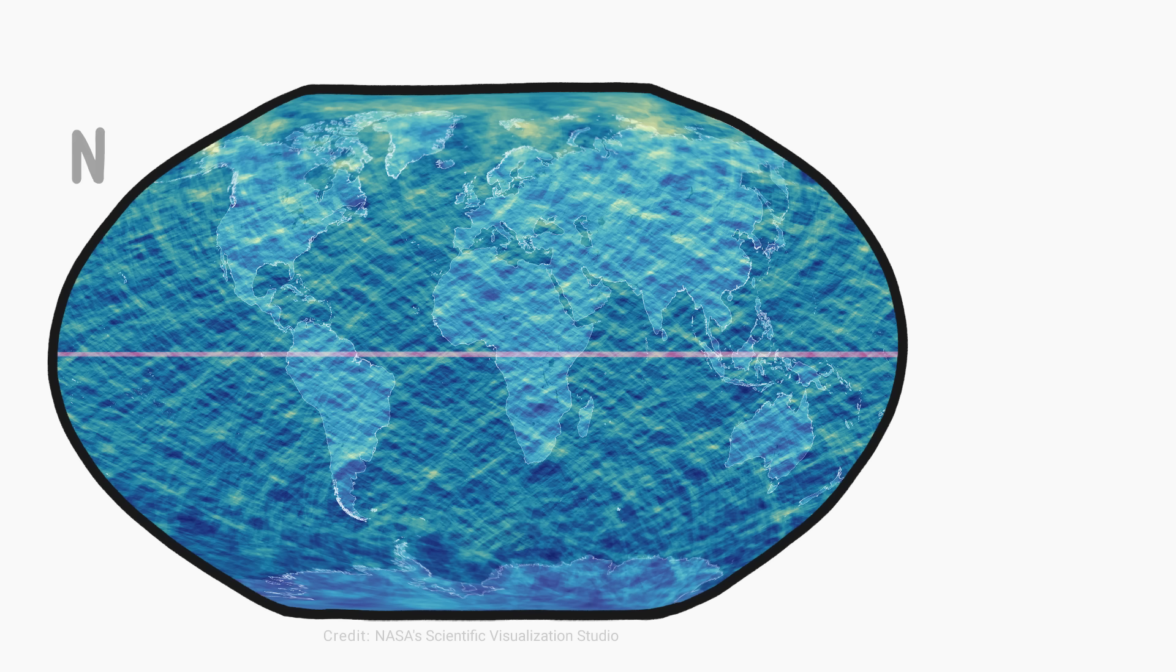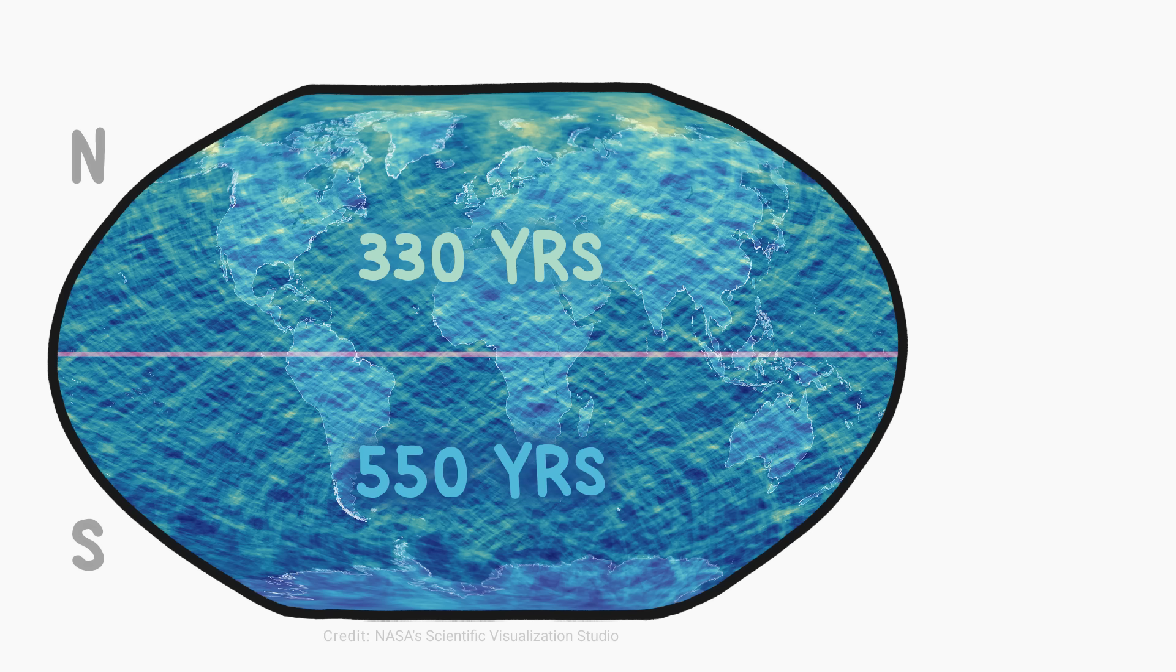For any given spot in the northern hemisphere, a total eclipse happens on average once every 330 years. In the southern hemisphere, it's more like once every 550 years.